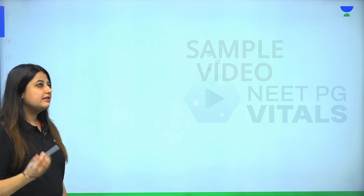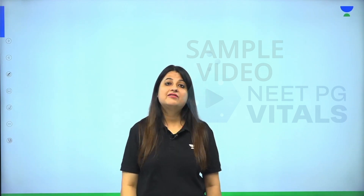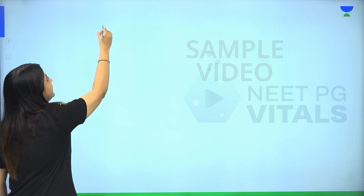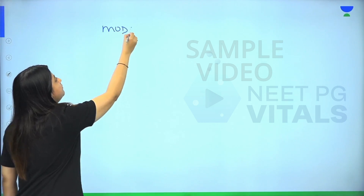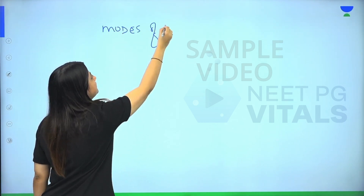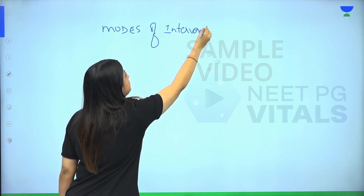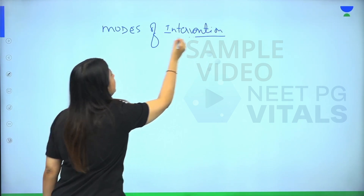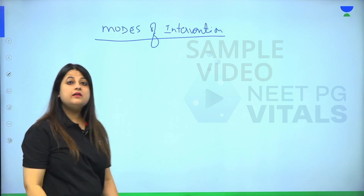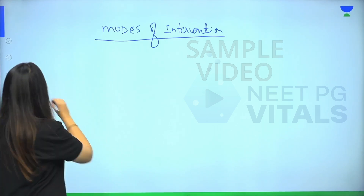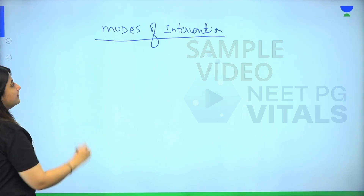The second question to address is: how do you achieve these levels of prevention? What are the modes of intervention that will help you achieve these levels of prevention? So our next topic is: what are the modes of intervention which will help us achieve these levels of prevention?